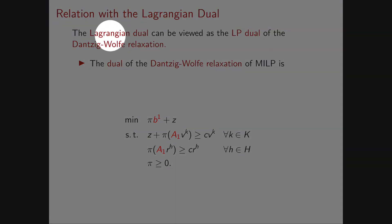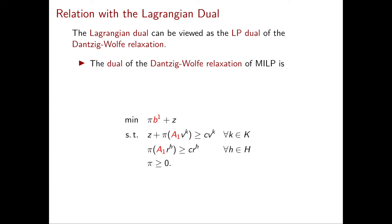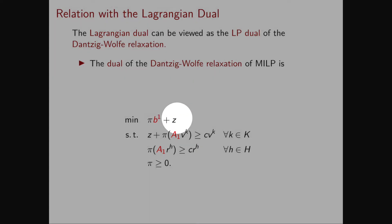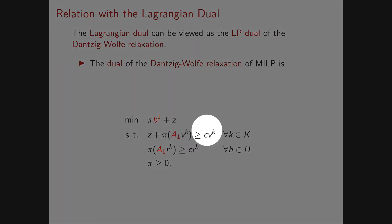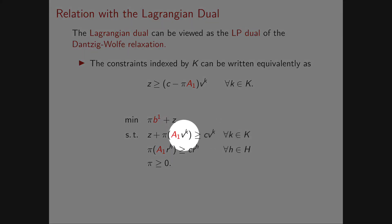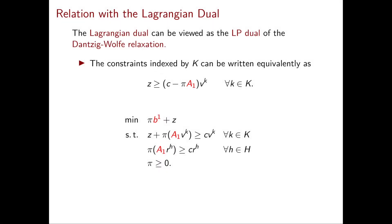Next, we show how the Lagrangian dual can be viewed as the linear programming dual of the Dantzig-Wolfe relaxation. Looking at the Dantzig-Wolfe relaxation and writing down its dual, the π variables are associated with the inequalities A₁x ≤ b₁ and the variable z corresponds to the equation Σ_{k∈K} λ_k = 1. The dual has one inequality for every k in K and one for every h in H. The first set of constraints can be rewritten by moving z to the left-hand side and everything else to the right.